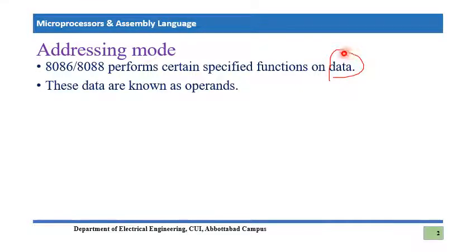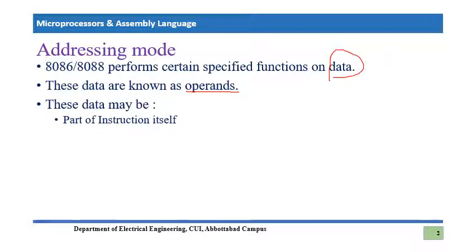Before we look at different ways, we must know that data is formally known as an operand. Operand means any data or information which is supposed to be processed by the microprocessor. The data may be part of the instruction — for example, data may be directly given in the instruction — or it may be stored in memory, or it may be a memory slot from which we need to fetch information.